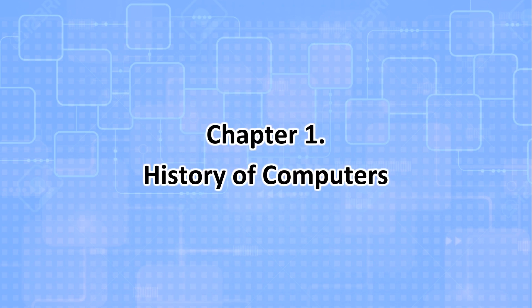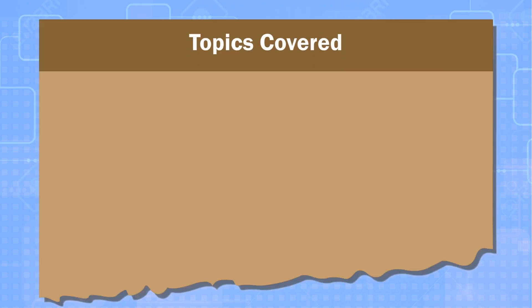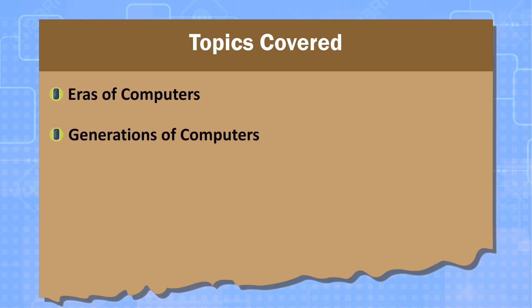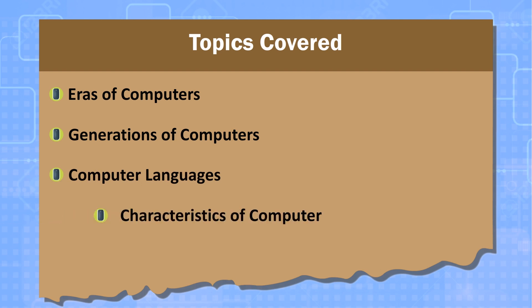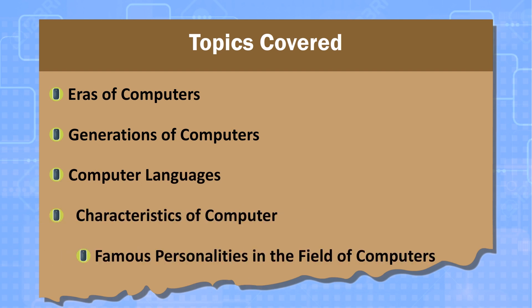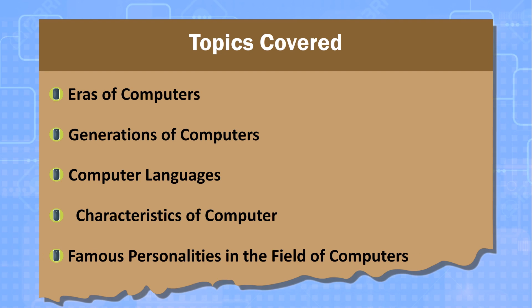Chapter 1: History of Computers. Topics covered include: Eras of Computers, Generations of Computers, Computer Languages, Characteristics of Computer, and Famous Personalities in the Field of Computers.